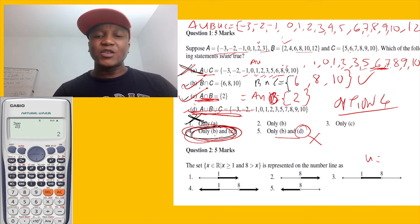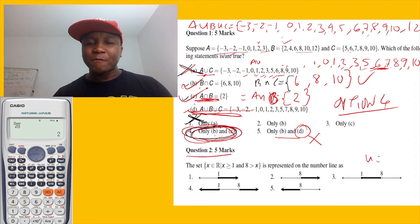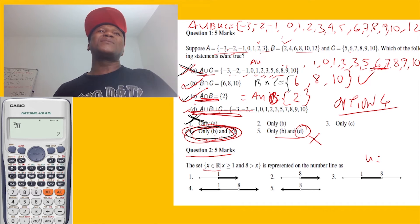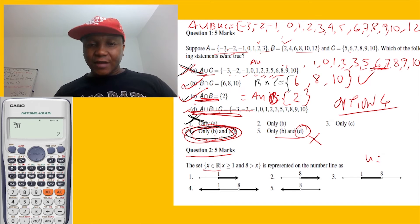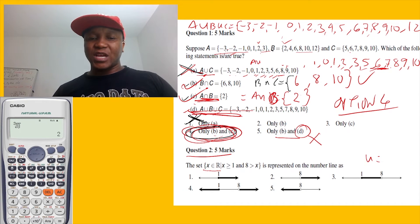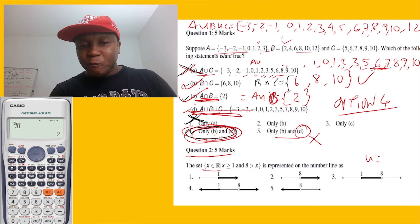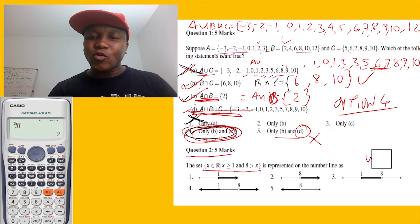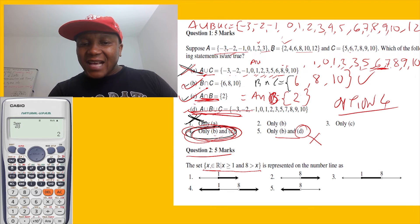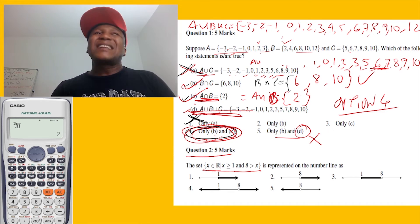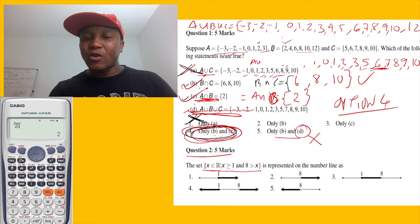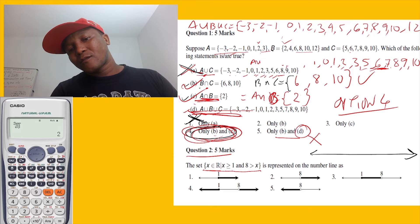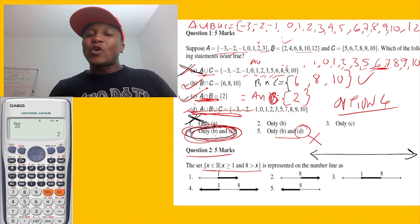Question number two: they give us data in set-builder notation and say to present this data on a number line. The set says x is an element of real numbers such that x is greater than or equal to one.